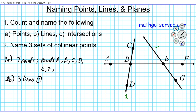For the first line going up and down, since there are three points on it, we can name it in three different ways: we can call it line CB, or line BD, or line CD.